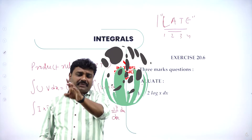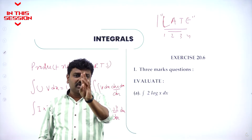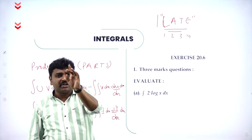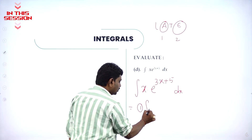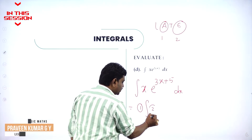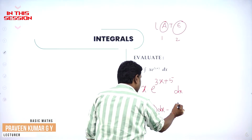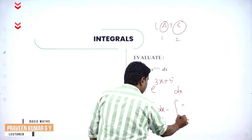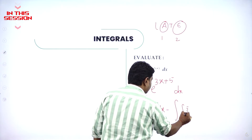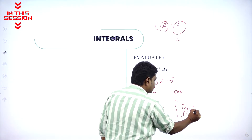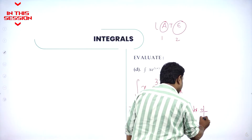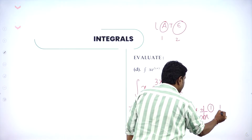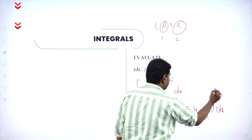Priority code is ILATE: logarithmic, algebraic, trigonometric, exponential. Integration by parts: integration of first function into second equals first function into integration of second, minus integration of the integration of second function into derivative of first function with respect to x.